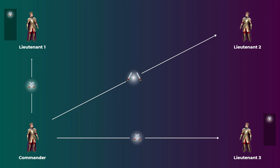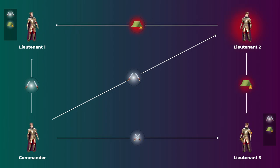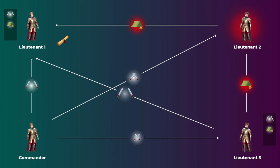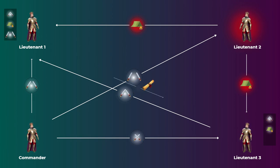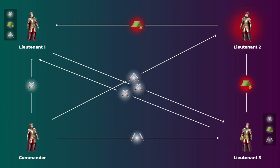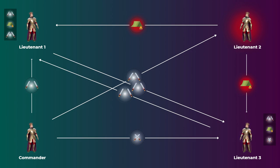So for example, if there is one traitor general, which is lieutenant two, he will send to the other two lieutenants and say that the commander told him to retreat. On the other hand, the loyal lieutenant three will send to the loyal lieutenant one that the commander told him to attack. And also, lieutenant one will tell lieutenant three the commander told him to attack. In this situation, from the perspective of lieutenant one, he got two attack messages and only one retreat message from the traitor, which is lieutenant two.